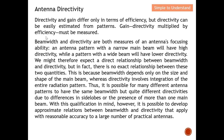Beamwidth and directivity are both measures of an antenna's focusing ability — both assess how well the antenna concentrates power in a certain direction. An antenna pattern with a narrow main beam will have high directivity, since most of the power radiates in that particular direction. Conversely, a wide beam implies lower directivity.